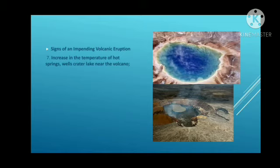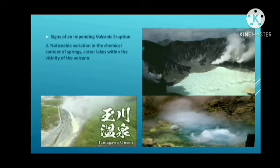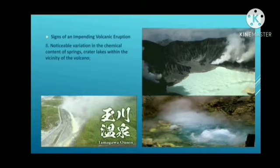An increase in the temperature of hot springs, wells, and crater lakes near the volcano is also significant. Hot springs of various kinds can be found near active volcanic areas, and heat flow and the rate of discharge of chemical constituents transported with hot springs are important factors in studying volcanic phenomena. Crater lakes within the vicinity of a volcano are typically the most acidic, with pH values as low as 0.1, compared to normal lake waters which have relatively neutral pH values near 7.0.